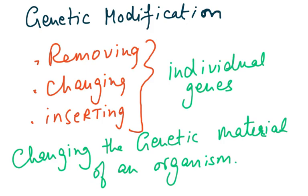What is genetic modification? You are going to either remove, change or insert individual genes, taking a gene from one organism and putting it into another, so you are changing the genetic material of an organism. For example, taking the human insulin gene from a human cell and putting it into a bacterial plasmid and then into the bacteria, so now you have genetically modified bacteria.